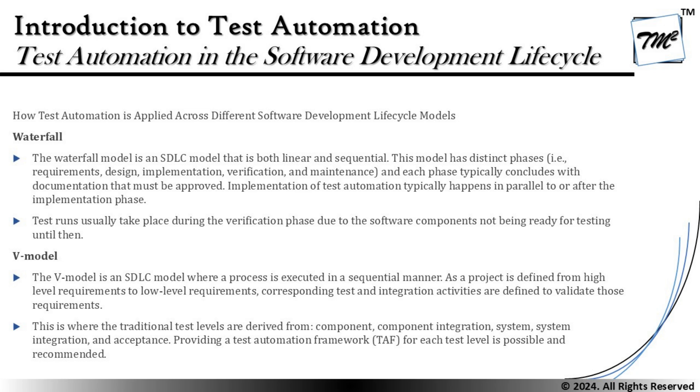The first model is the waterfall model, which is a linear and sequential development model with distinct phases like requirement, design, implementation, verification, and maintenance, where each phase typically concludes with documentation that must be approved. Implementation of test automation typically happens in parallel to or after the implementation phase. The reason is that we may not have enough budget to start early, and most things are not well known in sequential models. We may do quick reviews to find anomalies earlier, but implementing automation requires object identification and attributes, which are not available until implementation happens.